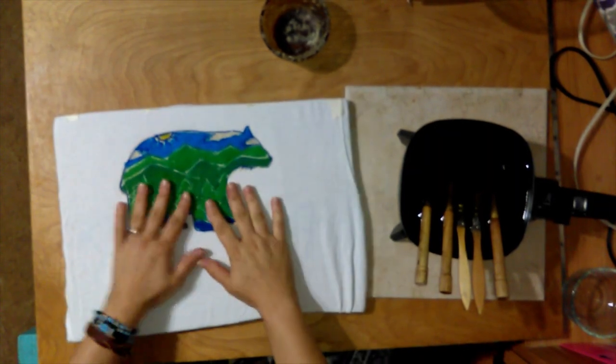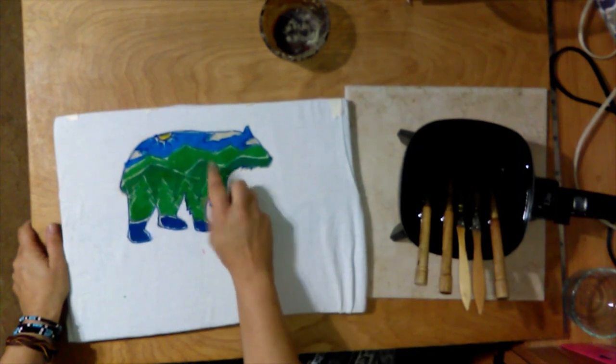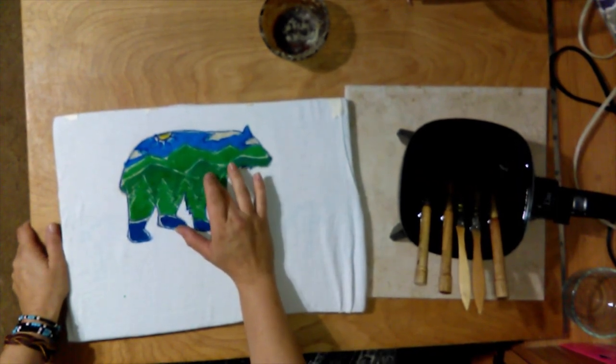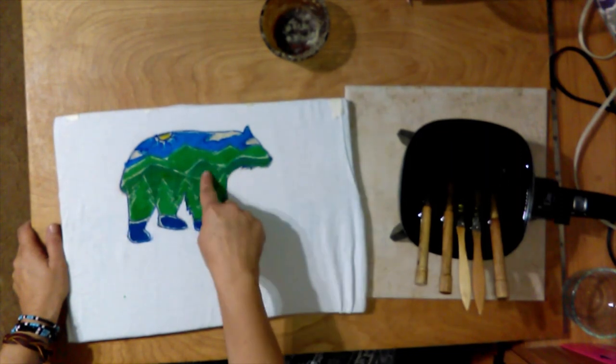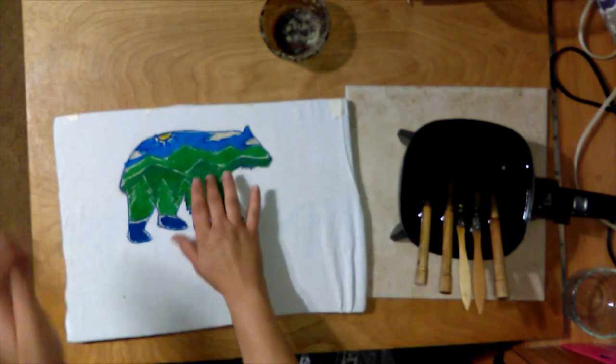Okay, so the shirt has sat overnight and all this dye is dry. The thicker your sodium alginate gel was, the warmer your wax needs to be to penetrate through it because it makes it a little thicker.